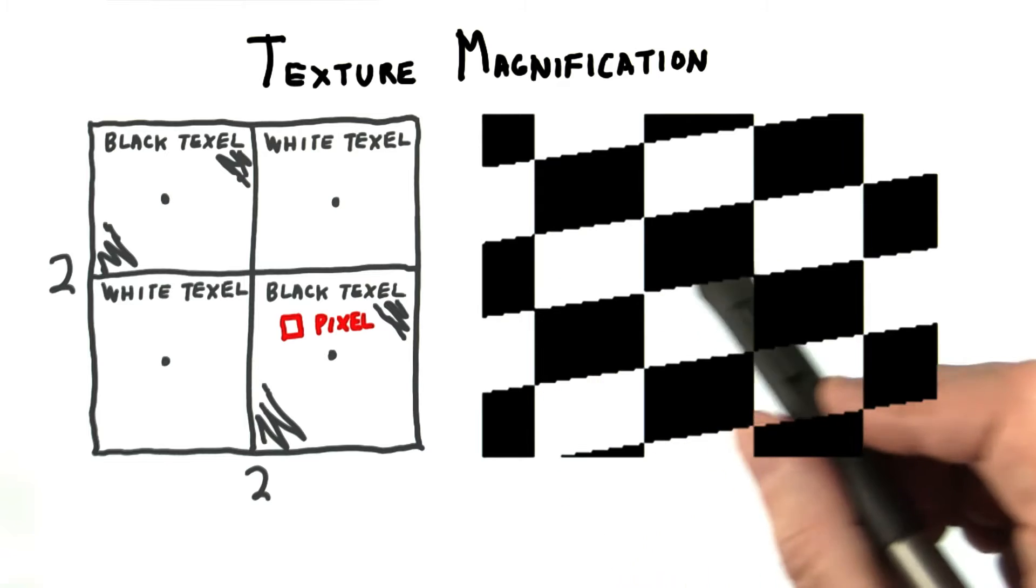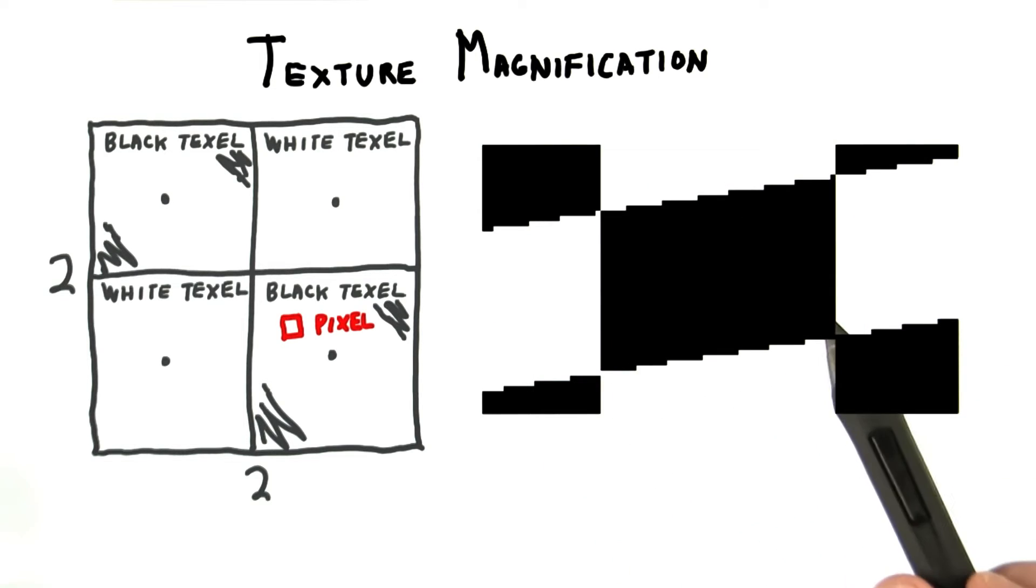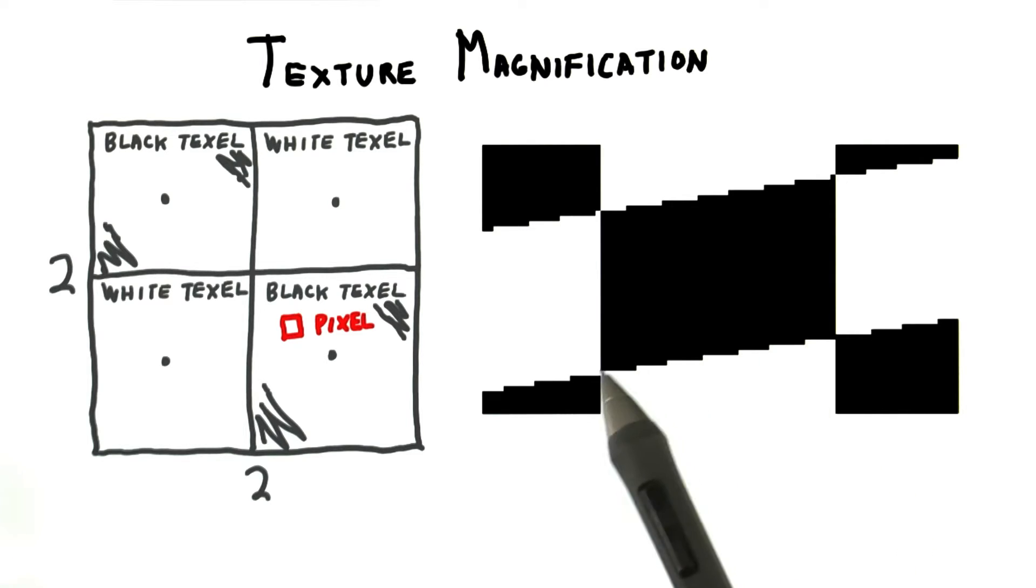However, if you view this texture from a different angle, it doesn't look so great. This is a zoomed in view, just to drive home the point. You get this stair-stepping effect instead of nice smooth edges. This is called the jaggies.